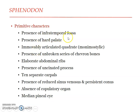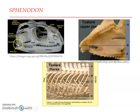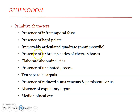Primitive characters of Sphenodon include the presence of infratemporal fossae, the hard palate (though similar to crocodiles, it is a primitive character), and the quadrate bone which is immovably articulated with the skull — this type of jaw suspension is known as monimostylic. Also primitive are the presence of chevron bones, elaborate abdominal ribs (gastralia), uncinate processes, and ten separate carpals — numerous carpals represent a primitive nature found in early vertebrates.